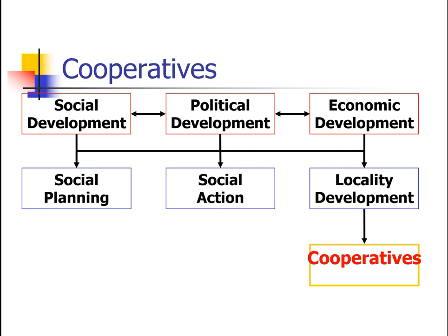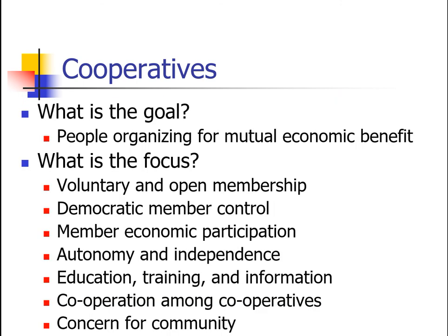When it comes to locality development, cooperatives are often used, and there's a strong history — especially in Cape Breton, Nova Scotia, in the 1920s and 30s as a result of the Depression, and also in the prairies and agricultural communities. The goal of cooperatives is for people to organize for mutual economic benefit through the pooling of production and resources. They are really a viable alternative to conventional economic structures, challenging the competitive ethic of our society.